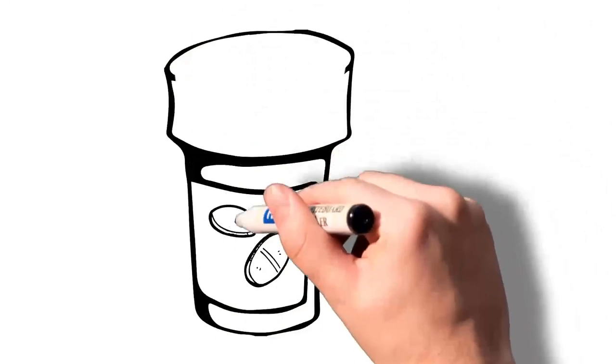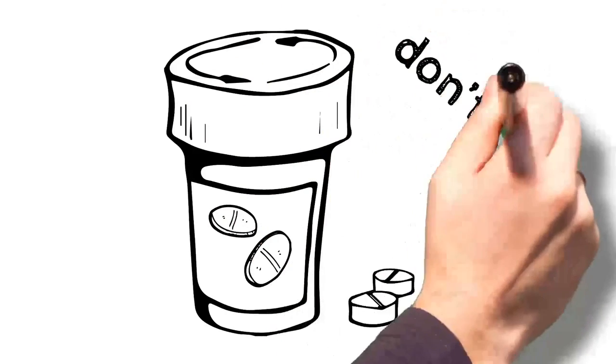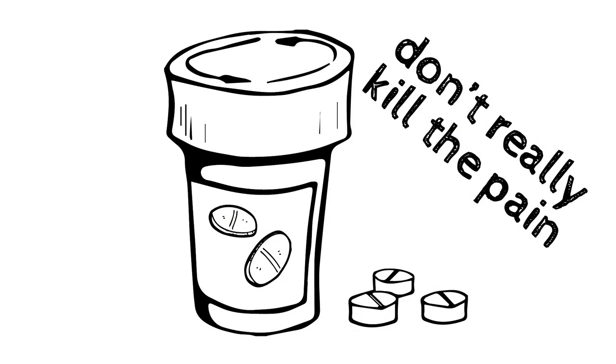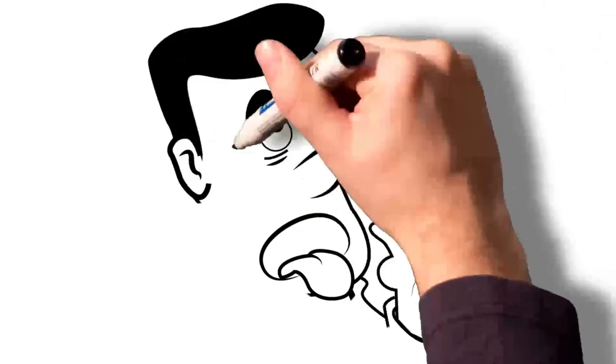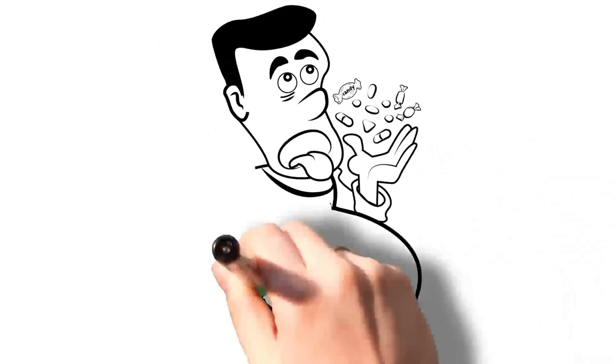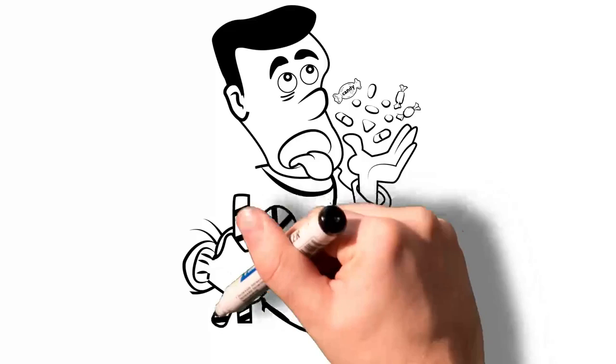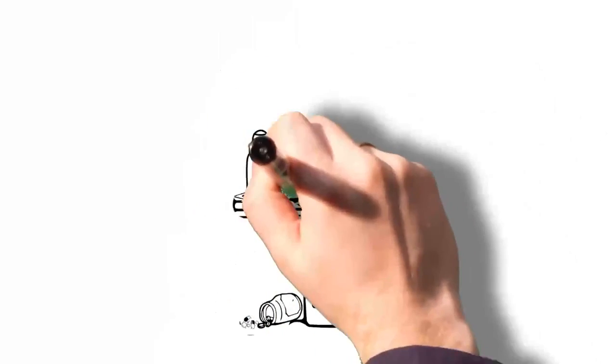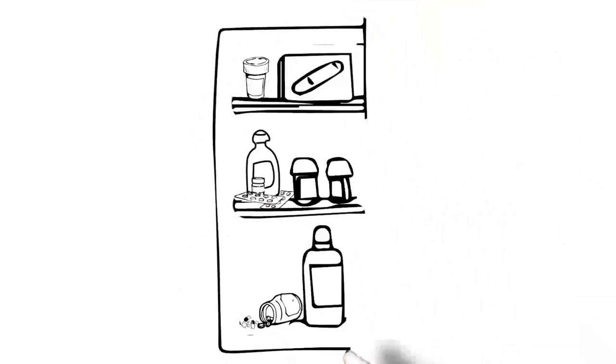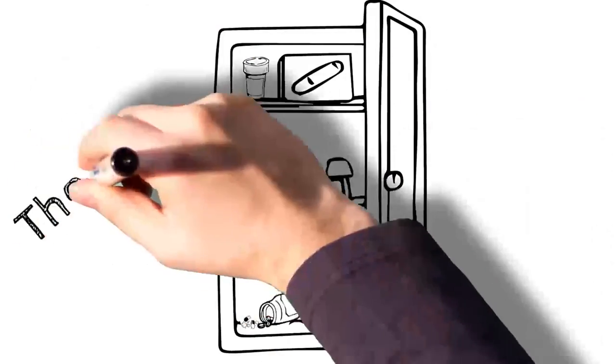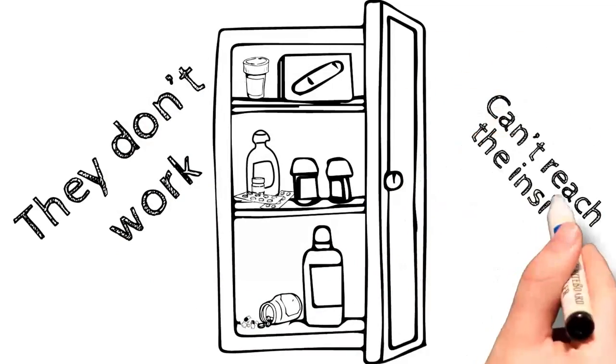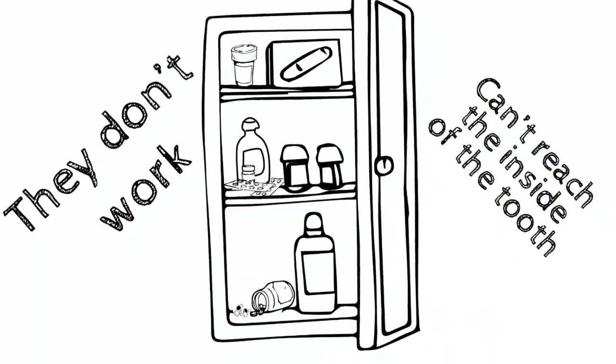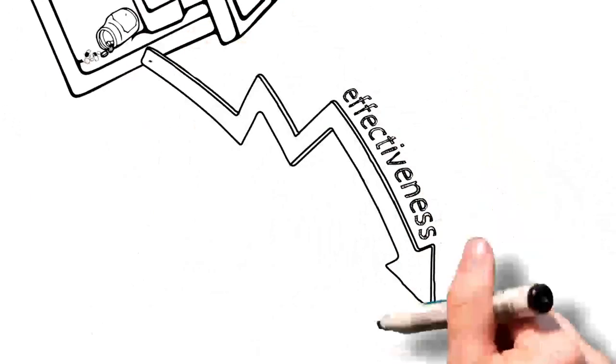First, there's over-the-counter painkillers. With a toothache, these don't really kill the pain, but they will reduce the throbbing a bit. Whatever you do, don't eat them like candy, thinking more is better. They'll just make you sick, in addition to having a toothache. I've heard of people getting their stomach pumped from having taken too many. Oh, by the way, speaking of drugs, don't even think of taking those old antibiotics you have stashed away in the medicine cabinet. Even though, in theory, they should work, they don't. It's probably because the antibiotics can't reach the inside of the tooth.